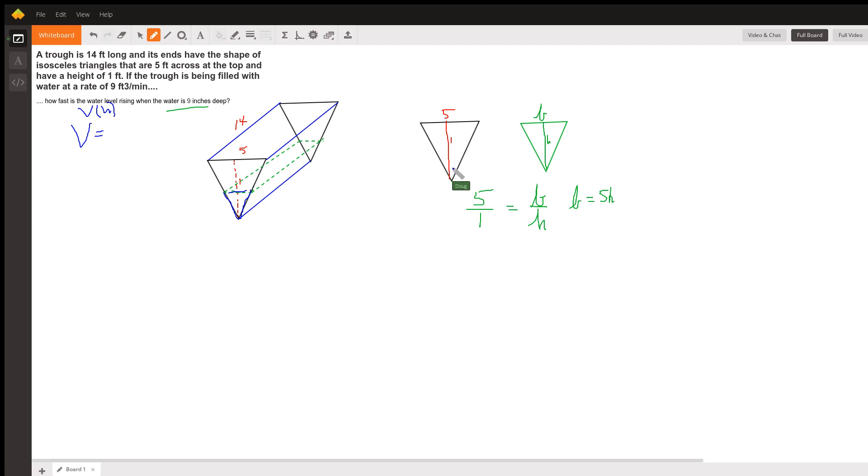First of all they share this angle right here and because this base is parallel to this base, these angles are congruent because when two parallel lines are cut by a transversal corresponding angles are congruent so these triangles are similar which means corresponding sides are in proportion